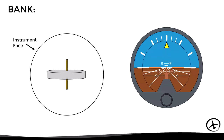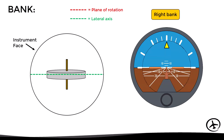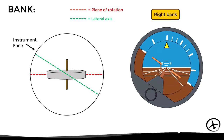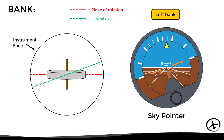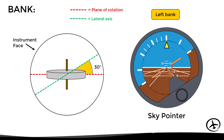Now let's see the bank indication. With the gyro's plane of rotation aligned with the horizon, when the aircraft banks to the right, both the aircraft and instrument bank to the right while the gyro remains rigid in space — allowing measurement of the bank angle, for example 30 degrees. In this example the bank indicator is a sky pointer, so although the aircraft banks to the right, the indicator appears on the left side of the scale. The opposite occurs when banking to the left.